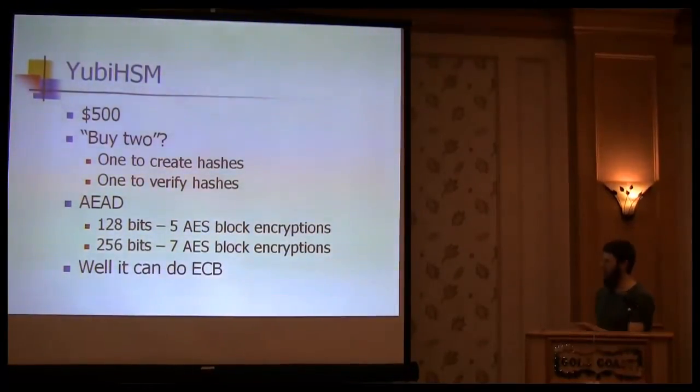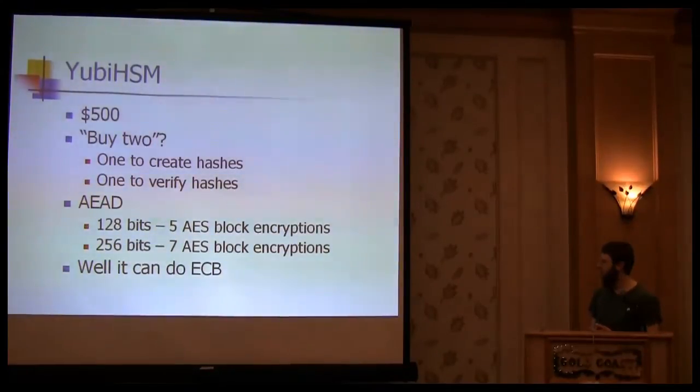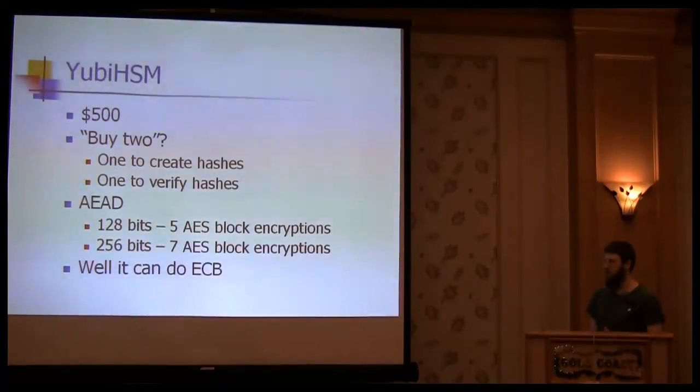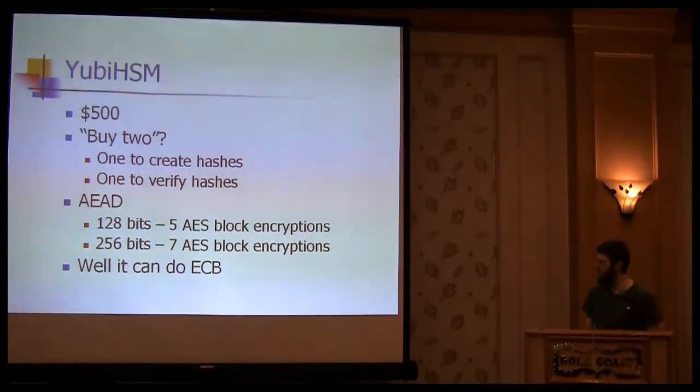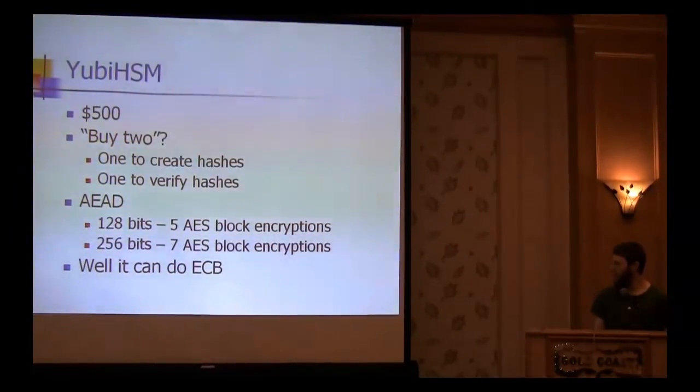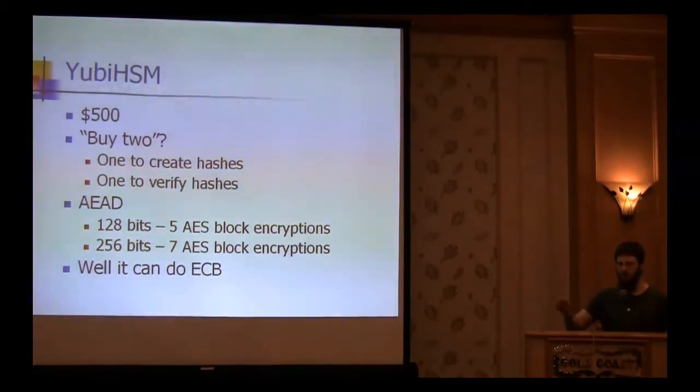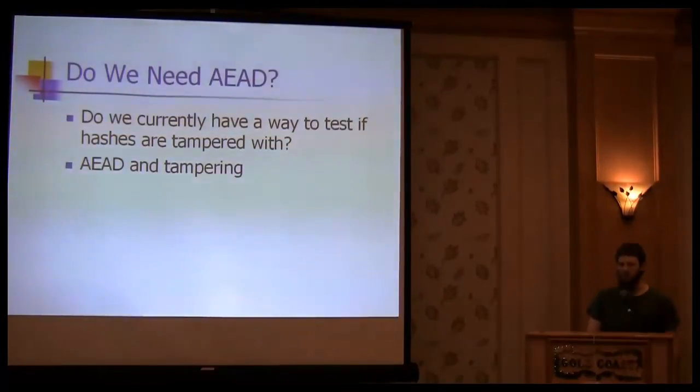But anyways, they use AEAD. And if your hash that you're trying to encrypt is only 128 bits, you have to do five blocks of AES encryption. And if it's longer than that, so like bcrypt, which is 23 bytes, it would have to do seven blocks of AES. You can also do ECB, which I think you can only do one block at a time, so you have to keep pinging it longer.